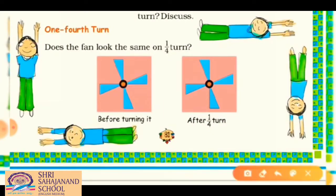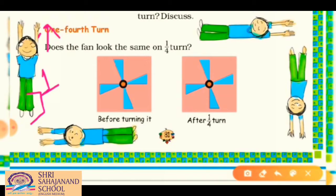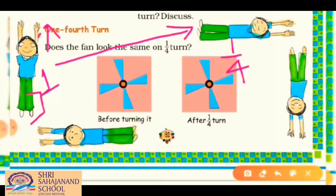Here is a boy in the first picture who is in a standing position — legs are downside and hands are upside. What will happen in one fourth turn? If you take a right turn in one fourth, you will get a sleeping position.